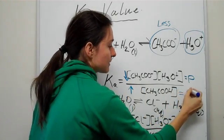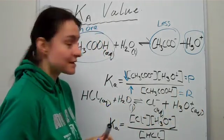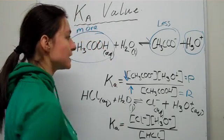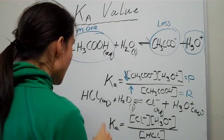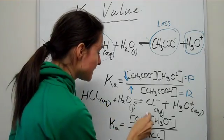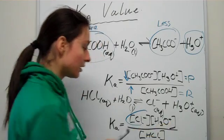What that tells you is that the Ka value will be small. It's going to be small for acetic acid.